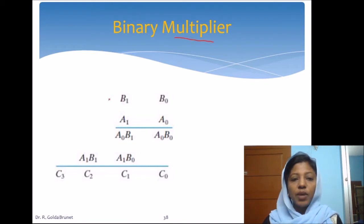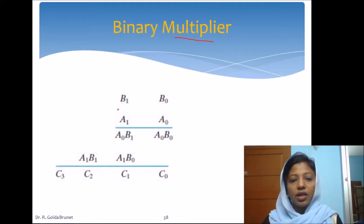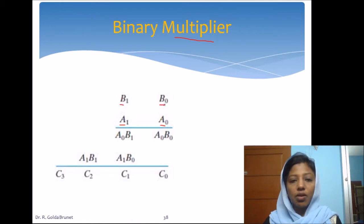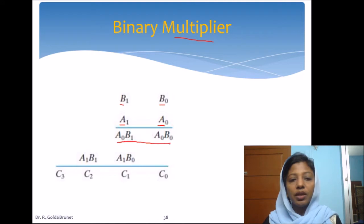We are given two binary numbers and we are supposed to get the product of them. Assume that we have a multiplier A which is 2 bits long and we have a multiplicand B which is also 2 bits long. When we multiply, we multiply the multiplicand with one bit of the multiplier — that is, we multiply B1 B0 with A0 and we get the partial product A0 B1 and A0 B0.